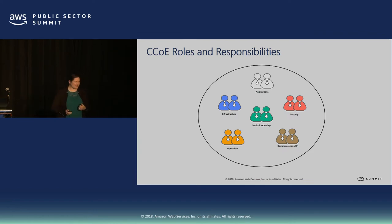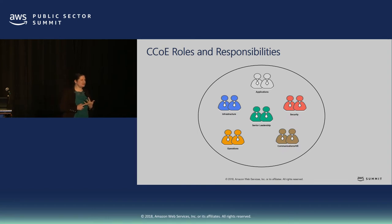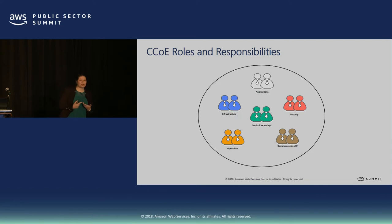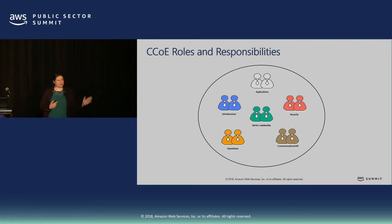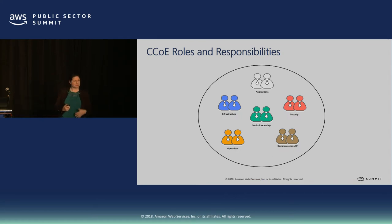Then we start thinking about operations — who's building the runbooks? Who's got a CMDB that may not be up to date? The cloud allows for transparency you've never had before: you know where everything is, you can tag, report, and know who's doing what in a way you couldn't fathom before. Operations goes all the way through to your help desk. We want to help you build those runbooks and playbooks so it's repeatable, and ultimately, as much as possible, automate it.